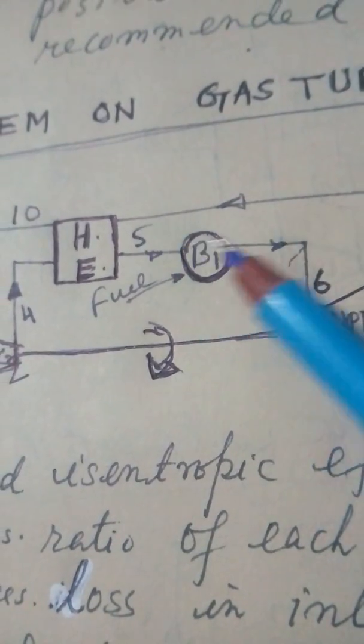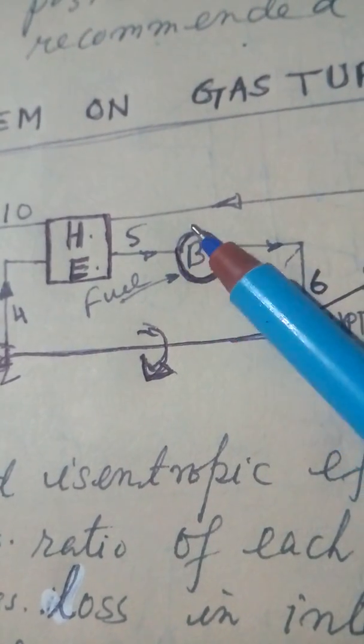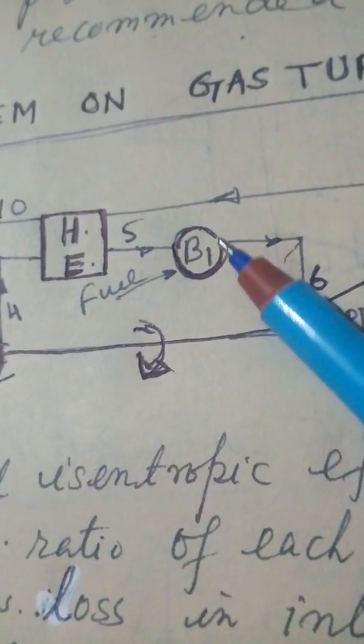Then, 5 to 6 is the gas boiler, or burner, gas chamber, combustion chamber.